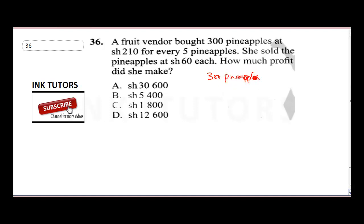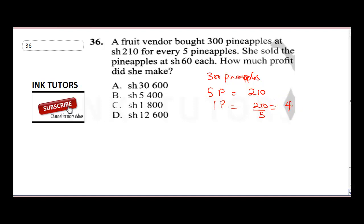For every five pineapples the cost is 210 shillings, so one pineapple will cost 210 divided by 5. Doing the division: 5 into 21 is 4, 5 into 10 is 2, so one pineapple costs 42 shillings. She sold each pineapple at 60 shillings.